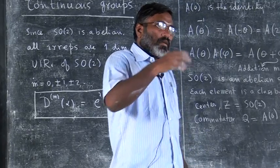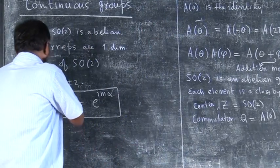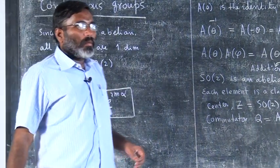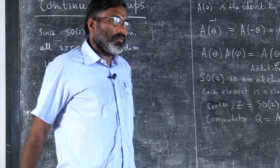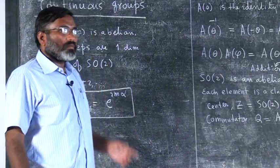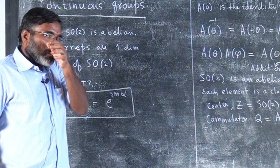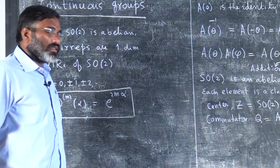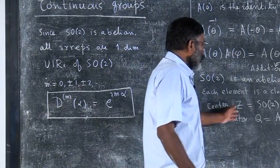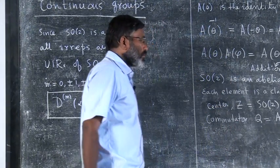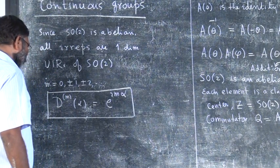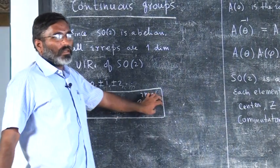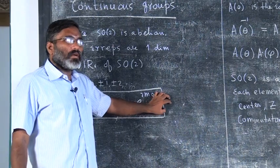Denumerable is countable. Here I can count: m equal to 1, m equal to 2, m equal to 3, like that — they are countably infinite. But between 1 and 2 there is no value of m; 1.1 is not there, for example. Yeah, there is discreteness here. It goes to infinity — that is called countable infinity. Here it is uncountably infinite. So the irreducible representations are given by these complex numbers e^{imα}.